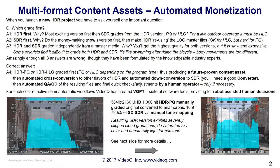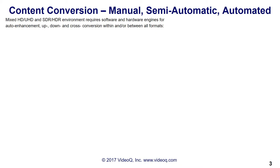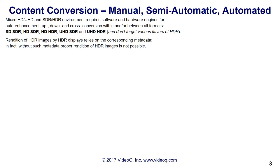Manual SDR color grading may produce images drastically different from the intended look and with noticeable artifacts. Mixed HD, UHD, and SDR/HDR environments require software and hardware engines for auto enhancement — up, down, and cross conversion, within and/or between all formats.